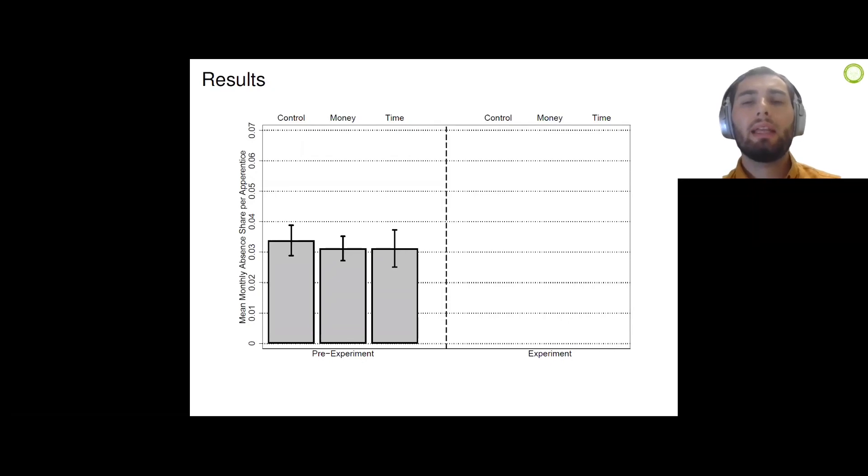Let me show you the intuitively appealing descriptive results. What you see here is the mean monthly absence share per apprentice in the pre-experimental period. It is around three percent, so out of 100 scheduled days, an average apprentice is absent around three days. Let me show you how the share evolves during the experiment. First, we see that the absence share also increases on average in the control group. We use an external control group that shows the same increase, thereby suggesting that this likely reflects a time trend.